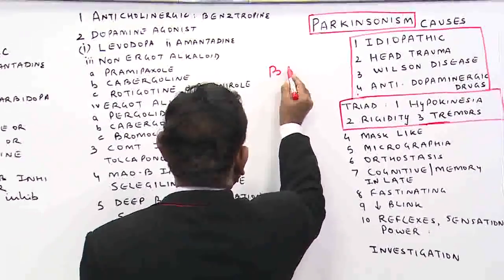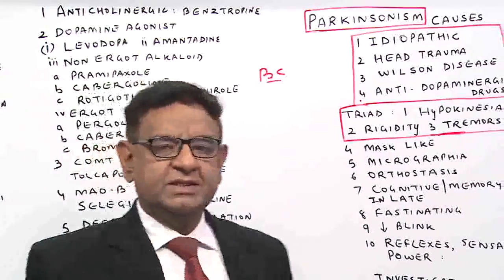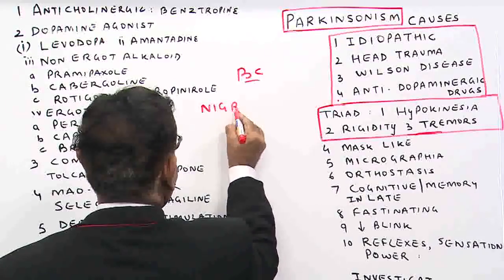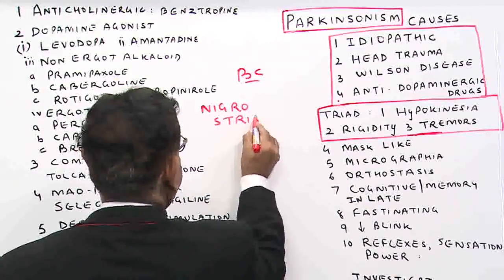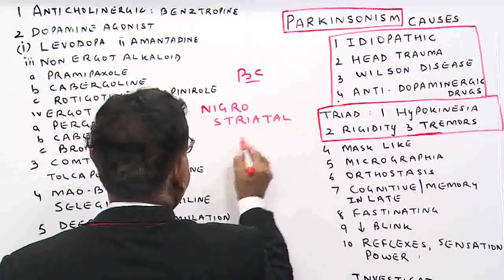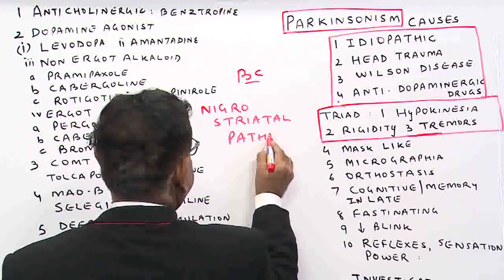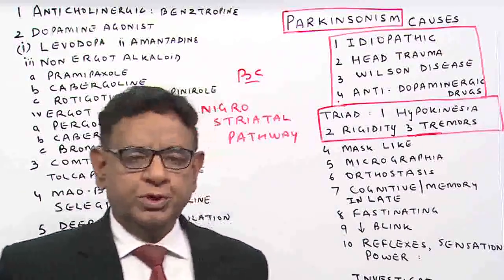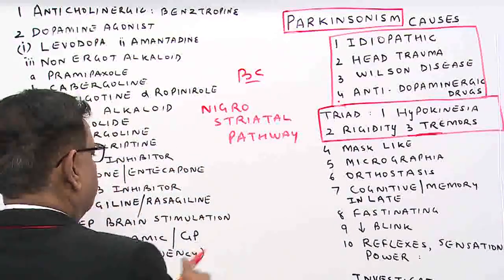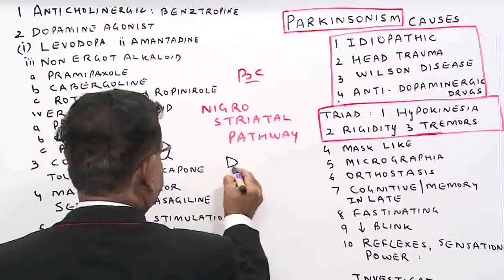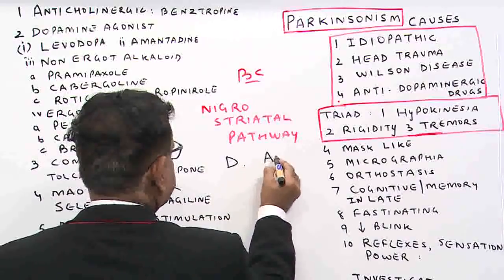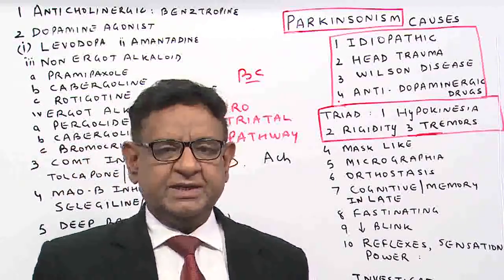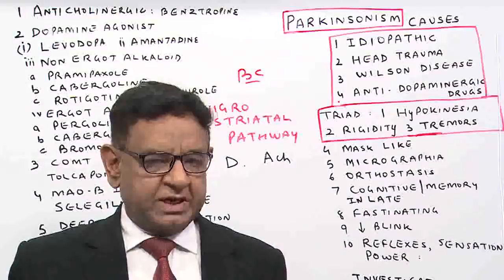The basic concept goes like this: Parkinson is the disease of the nigrostriatal pathway and there are two neurotransmitters in this pathway. One is dopamine, and the other is acetylcholine. These are the two which maintain the function of the nigrostriatal pathway.